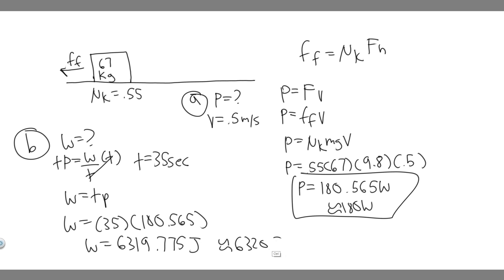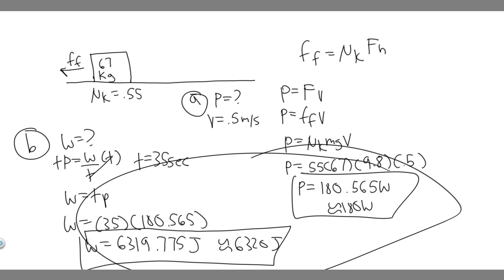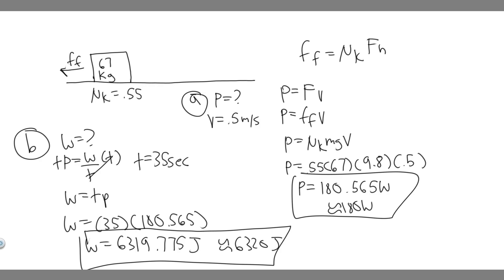You can round to 6,320 joules — just make sure you do it how your teacher wants you to. So 6,320 joules is how much work is done pushing the box for 35 seconds, and that's your answer for Part B. Hopefully you found this useful.